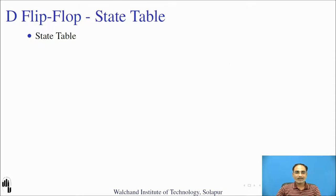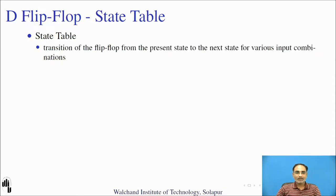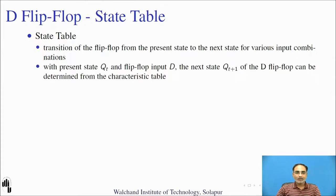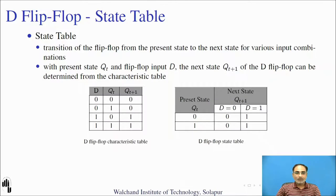Now let us understand the state table. The state table shows the transition of the flip-flop from the present state to the next state for varied input combinations. With the present state and the flip-flop input, the next state can be derived from the characteristic table. This table has present state and next state columns, with next state sub-columns for D=0 and D=1.